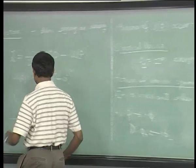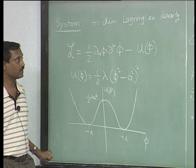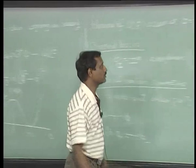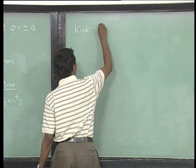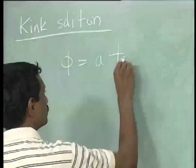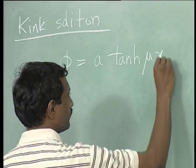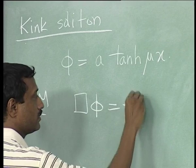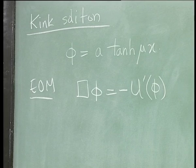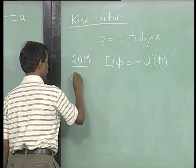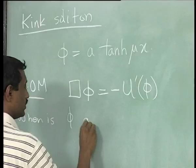Now comes the interesting thing we had discussed earlier: we can have interpolating solutions. This is one of the few examples where we have an explicit analytical solution. We will look at the kink soliton and put in an ansatz. We need to check if it satisfies the equations of motion — the Euler-Lagrange equation is just □φ = −U′(φ).